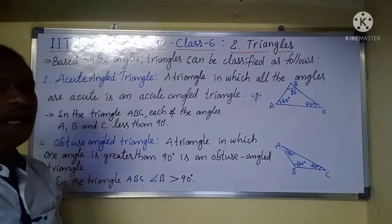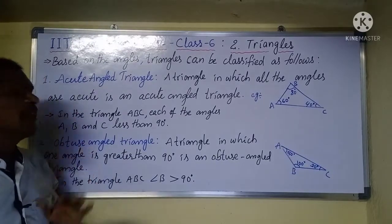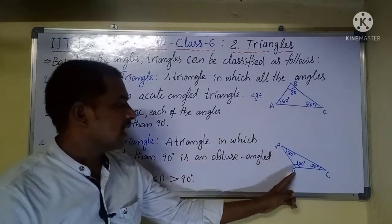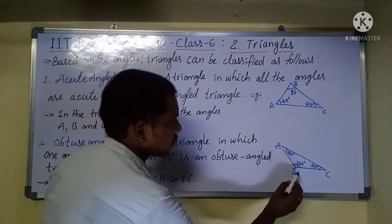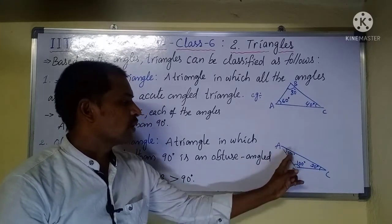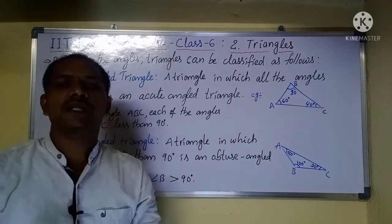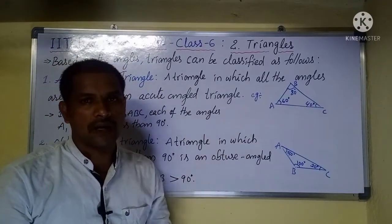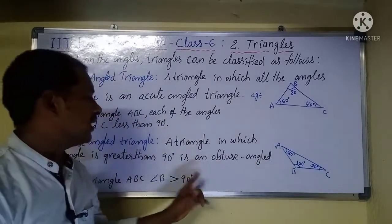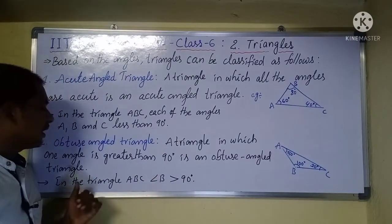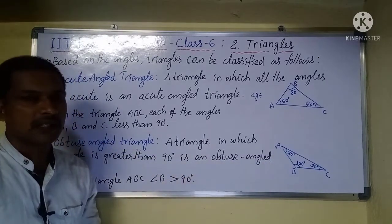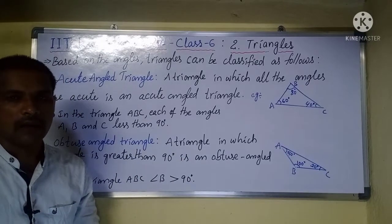The second type is an obtuse angle triangle. A triangle in which one angle is greater than 90 degrees is called an obtuse angle triangle. In triangle ABC, angle B is greater than 90 degrees and the remaining two angles are less than 90 degrees. So this is an obtuse angle triangle.